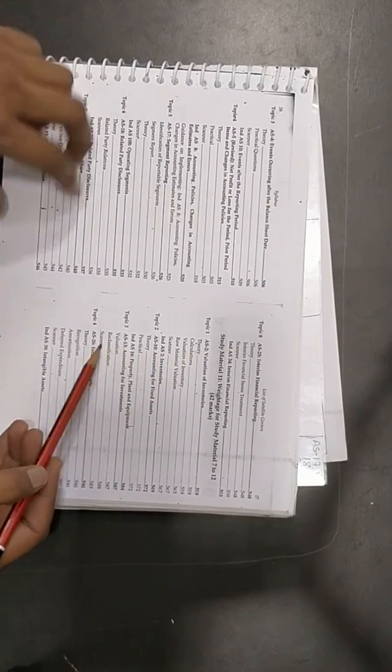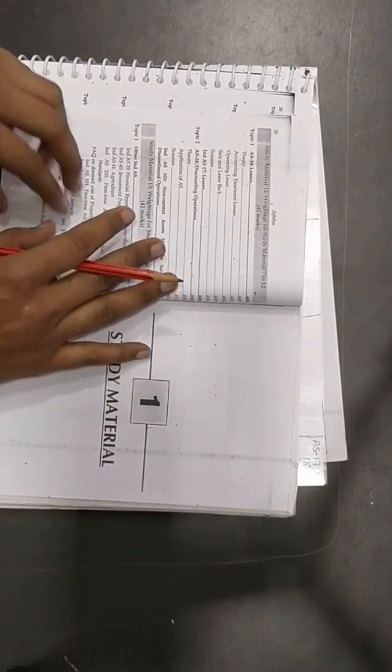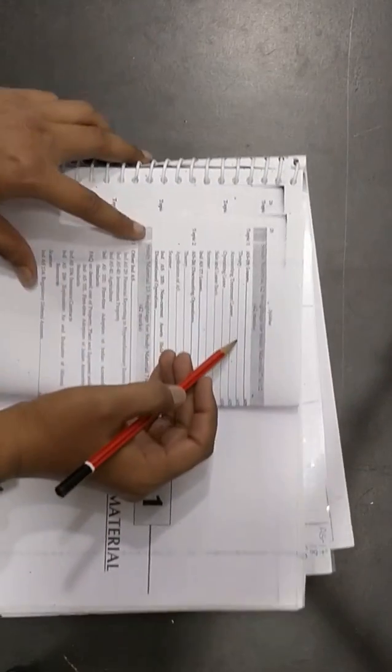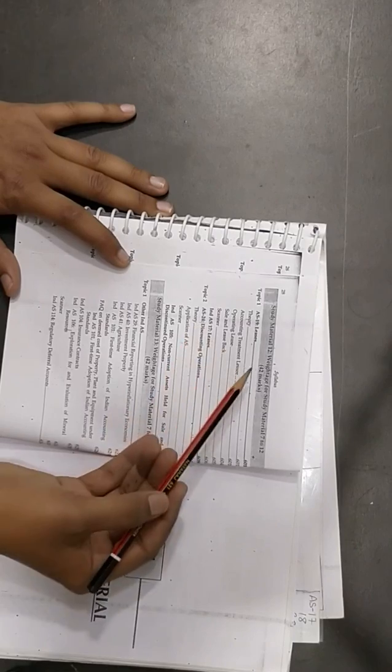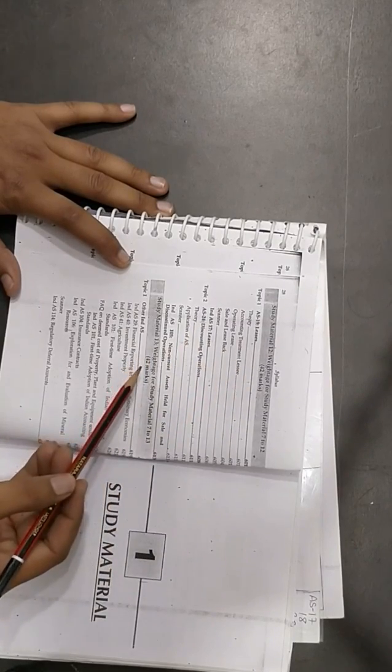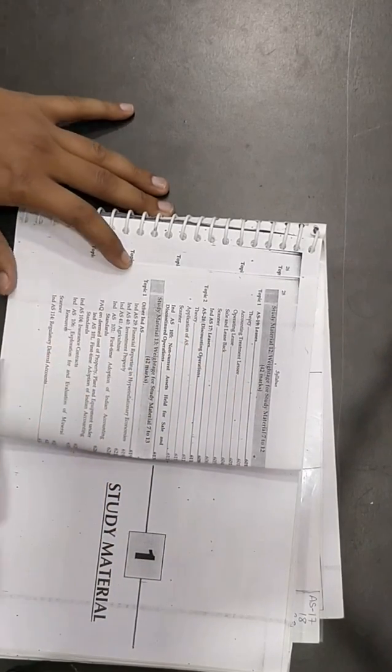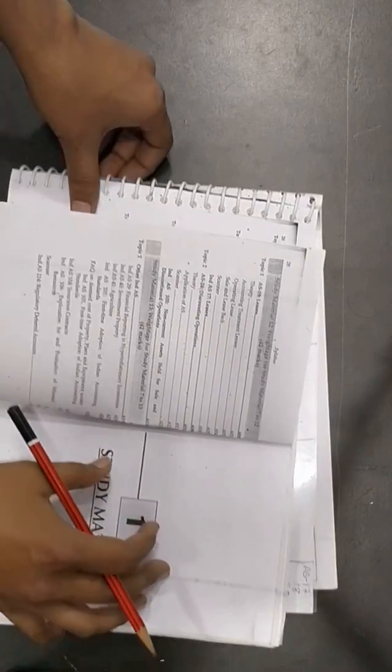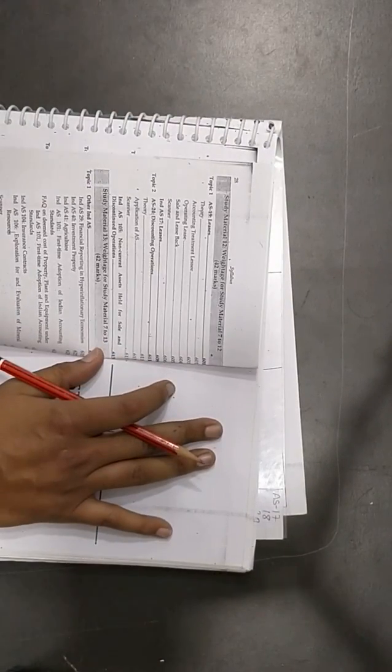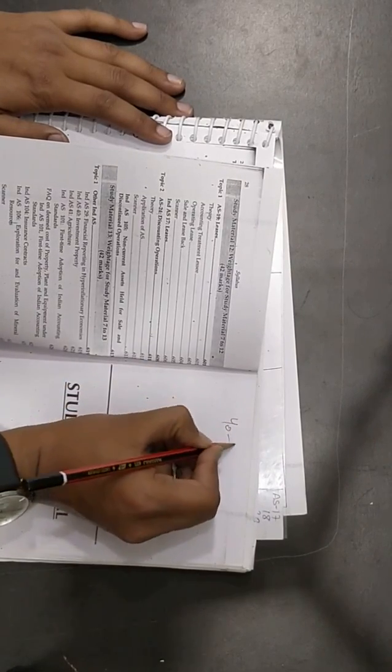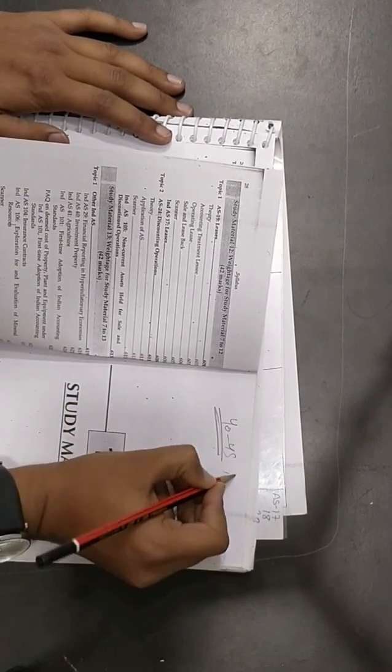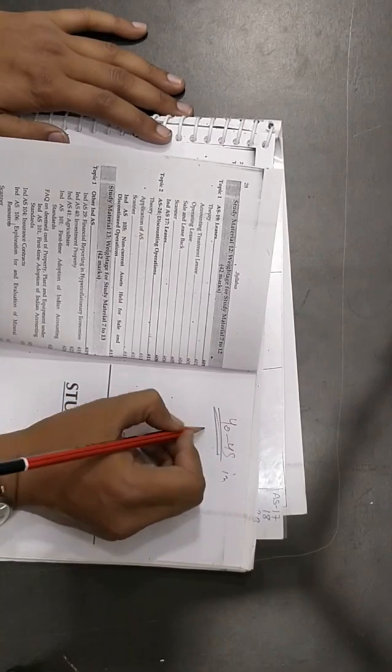AS2, AS10, AS13, AS26, then we have AS19, AS24, weightage again 42 marks. So overall the accounting standards do have a weightage from 40 to 45 marks in papers.